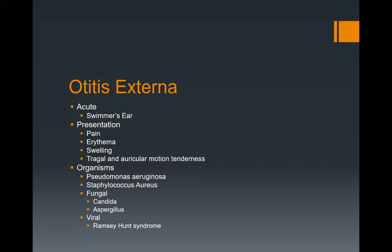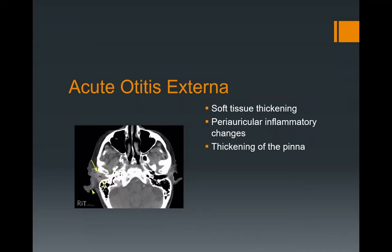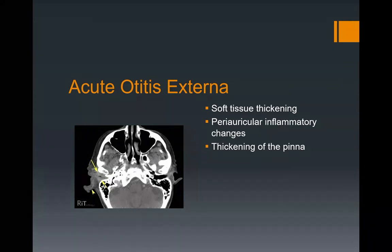Fungal infections such as Candida or Aspergillus, or you can get a viral otitis externa such as what you may see in Ramsay-Hunt syndrome. With acute otitis externa, you'll typically see soft tissue thickening within the EAC, periauricular inflammatory changes, erythema or swelling. On imaging, you'll see skin thickening, stranding of the fat, inflammatory soft tissue, and you may even see thickening of the cartilaginous portion of the EAC.